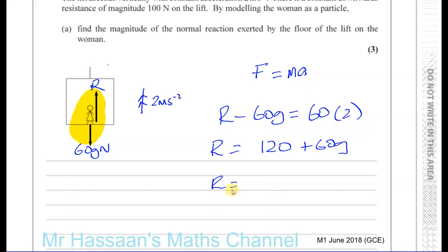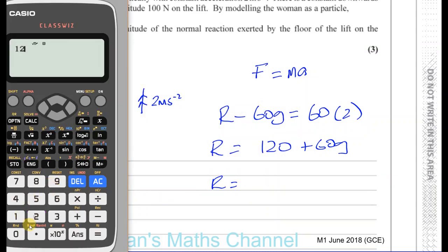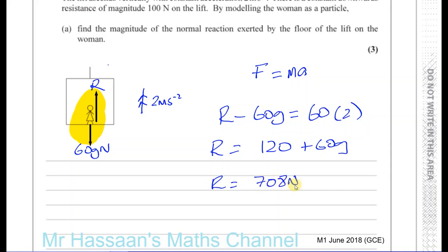That gives us 120 plus 60 times 9.8, which equals 708 newtons. If you wrote 710 newtons, that would also be acceptable because when we use g as 9.8, we can round to 2 significant figures. So 708 or 710 are both acceptable answers. When you use g as 9.8 in mechanics questions, answers to 2 or 3 significant figures are both acceptable.